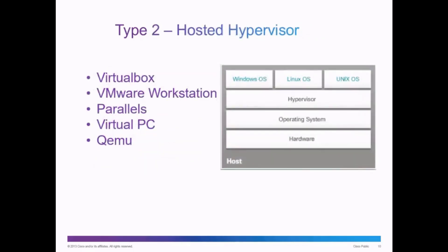A Type 2 hypervisor is known as a hosted hypervisor. In this situation, the hypervisor is an application or program that is installed on top of the host operating system. You install the hypervisor — like VirtualBox or VMware Workstation or Parallels Virtual PC — on top of the host computer. For example, you install VirtualBox on top of the Windows operating system, and then you can create virtual computers.